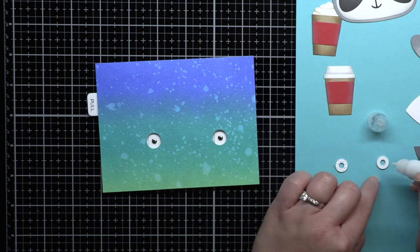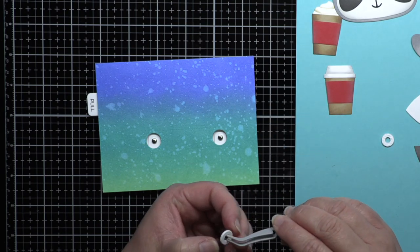Next, I used liquid adhesive to adhere my layered circles over each brad before adding my critters.